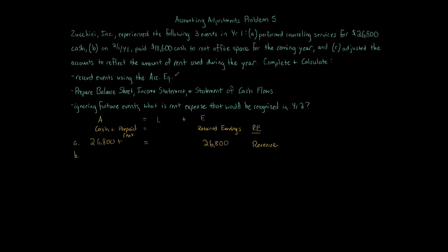Let's go to transaction B. On February 1st, year one, paid $18,600 cash to rent office space for the coming year. We have a reduction in cash, $18,600, and we have an increase in prepaid rent. Prepaid rent is an asset because it's a future benefit of renting out space. So prepaid rent goes up by $18,600 and the equation balances.